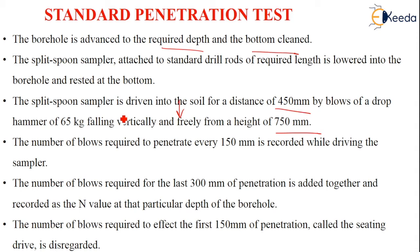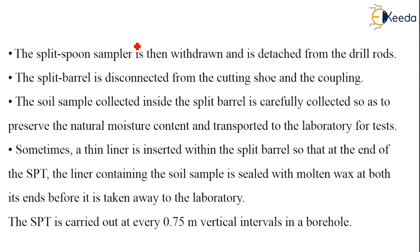The number of blows required to penetrate every 150 mm is recorded while driving the sampler. The number of blows required for at least 300 mm of penetration are added together and the recorded N-value at a particular depth of the borehole is noted. The number of blows required for the first 150 mm of penetration are called the seating drive and are disregarded. Then the split spoon sampler is withdrawn and detached from the drill rods, and the split spoon barrel is disconnected from the cutting shoe and coupling.